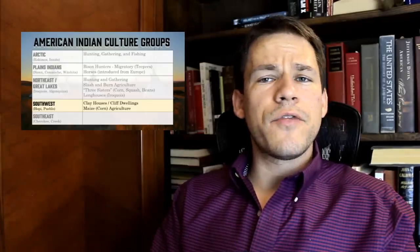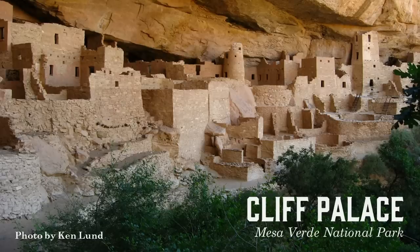Moving on to the Southwest, where people are more settled — living in clay houses and cliff dwellings because they practice maize, or corn, agriculture. That's most of what they grow and eat, so they tend to live in one place. You can see a Hopi apartment complex: a multi-family dwelling divided into several apartments with ladders and fortified walls — no doors on the outside — so many people can live in an enclosed area and defend themselves easily. The most famous of the cliff dwellings is the Cliff Palace in Mesa Verde National Park — very elaborate.